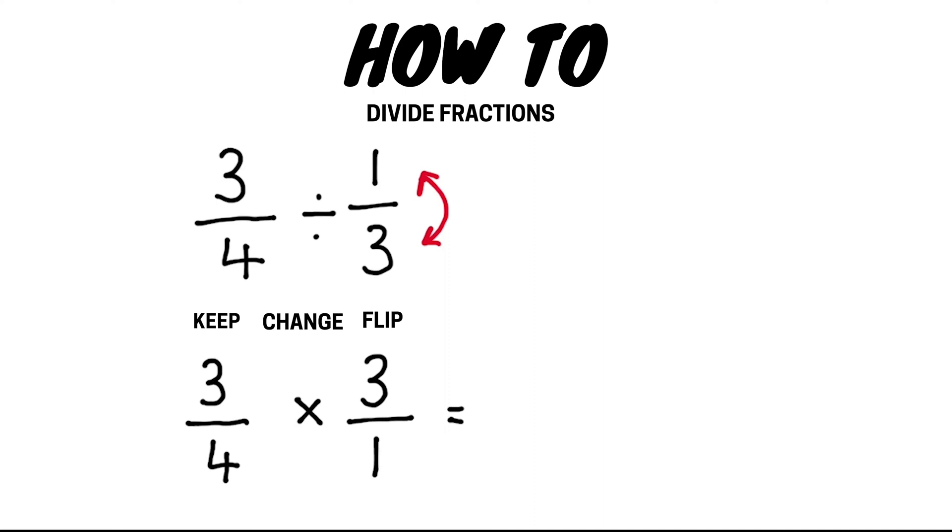Now we continue by multiplying the two fractions. We multiply the numerators so three times three is equal to nine. We then multiply the denominators four times one is equal to four.